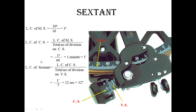Here I am showing how to calculate the least count of this sextant. The least count of the main scale is 10 degrees divided by 10, which equals 1 degree. The least count of the circular scale is the least count of the main scale divided by the total number of divisions on the circular scale: 1 degree divided by 16 equals 1 minute. This means the interval between two divisions on the main scale is divided into 16 parts, each equal to 1 minute.